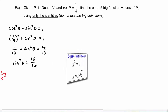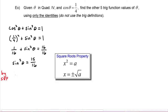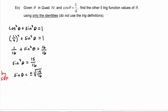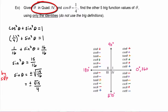By the square root property, sine of theta is plus or minus the square root of fifteen over sixteen, which simplifies to plus or minus radical fifteen over four. Since theta is in quadrant four, the sine of theta must be negative. So our final answer is sine theta equals negative radical fifteen over four.